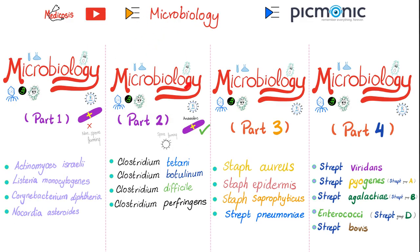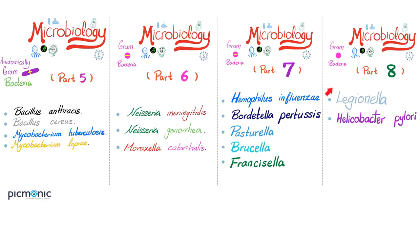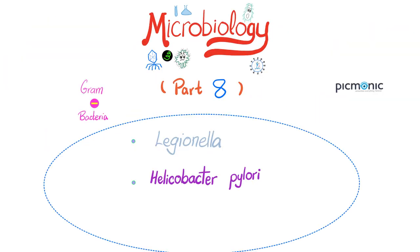This is my eighth microbiology video with Picmonic. You will find all of them organized in a playlist called Medicosis Picmonic on YouTube. Here is a list of the organisms discussed in videos one through seven, all the way until today. In today's video we are talking about gram-negative rods, specifically Legionella and Helicobacter pylori.